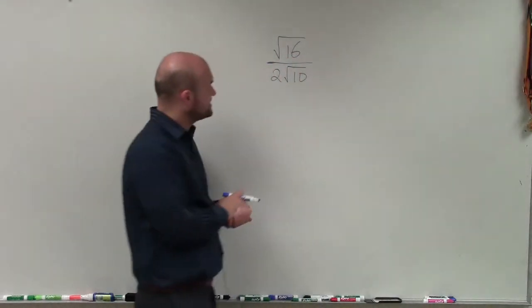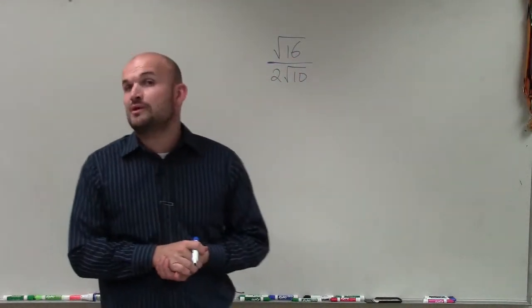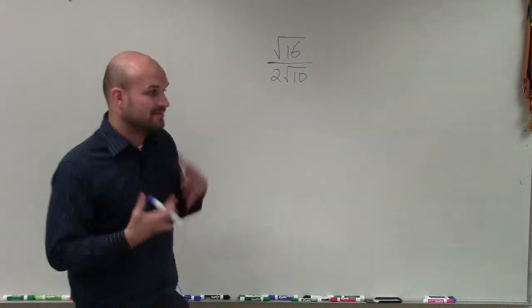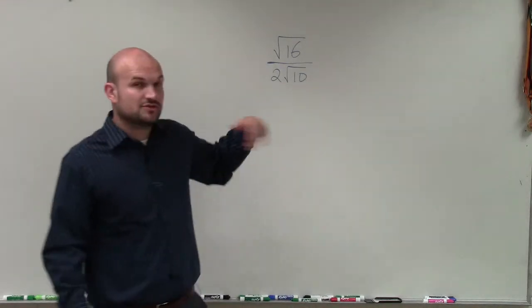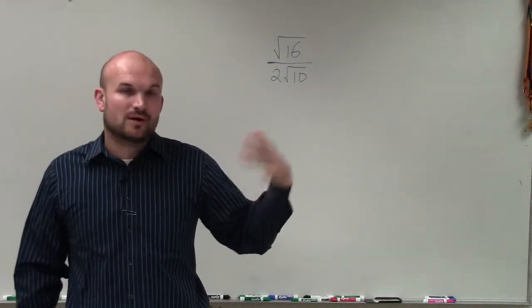Welcome. All right, so what I have here is the square root of 16 divided by 2 times the square root of 10. I want to simplify this, and to do that, I'm going to have to get rid of the square root of 10 by rationalizing the denominator.